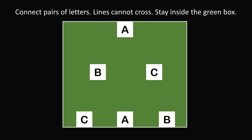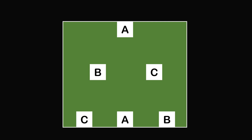At first, this seems impossible. If you connect the two boxes labeled A, that will create a barrier, so you won't be able to connect the two boxes labeled B or the two boxes labeled C. So obviously, we need a different way to connect the two boxes labeled A.